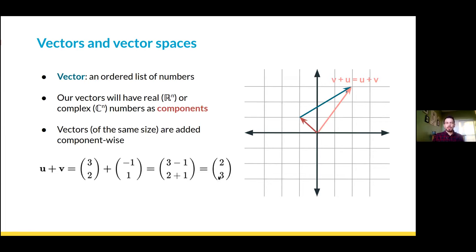Vector addition basically comes from the addition of the scalar components, the real or complex values, so addition follows all the normal rules. Namely it's commutative, distributive, and associative. We can reverse the order of the sum and get the same vector out.